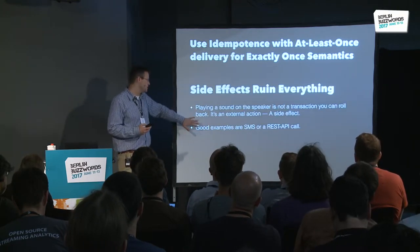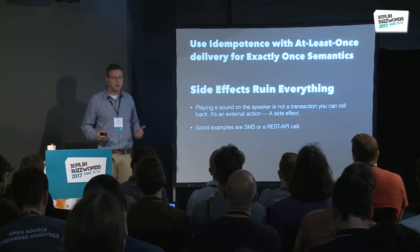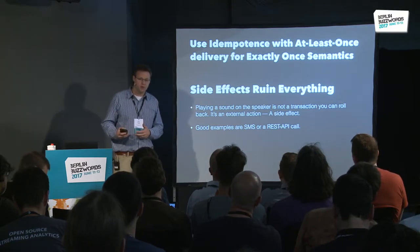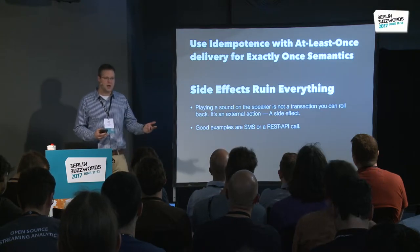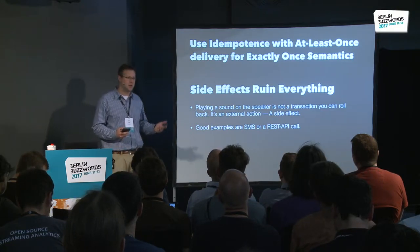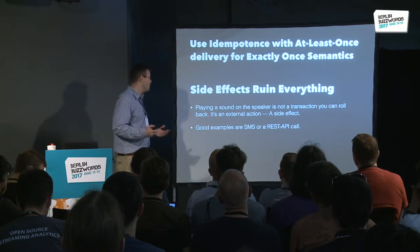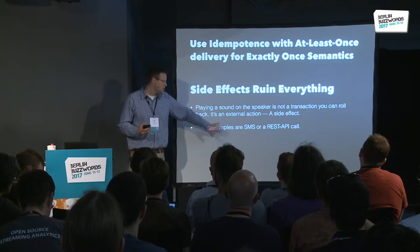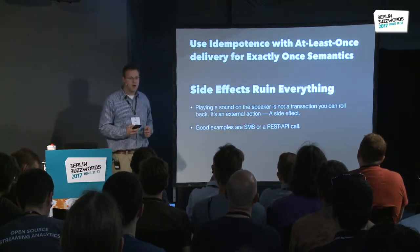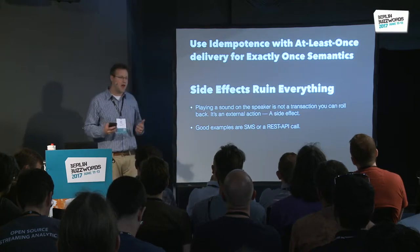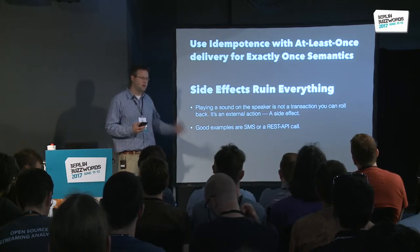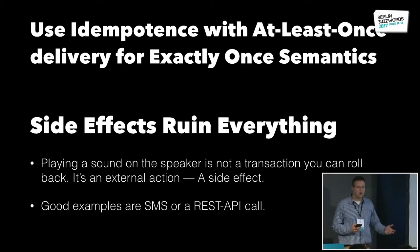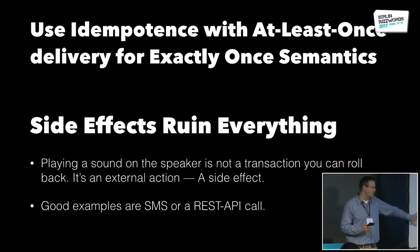Side effects ruin everything. Playing the sound on a speaker is not a transaction — it's not something I have control over. If the speaker wire is cut and I tell it to play a sound but it didn't, that's not anything I control — I consider that a side effect. Good examples are when you send an SMS message or make a RESTful API call. If those fail, you basically have to pick: I want to guarantee someone sees this, and maybe they'll see it more than once; or I want to make sure no one ever sees this twice, which means maybe they won't see it. With side effects, I can just build it as robustly as I can.